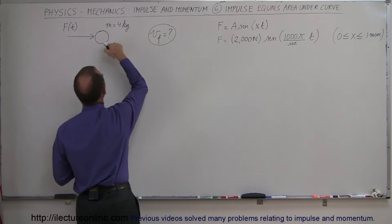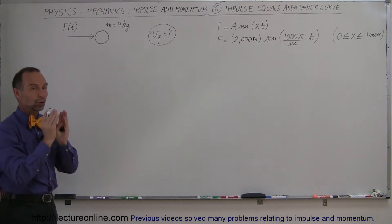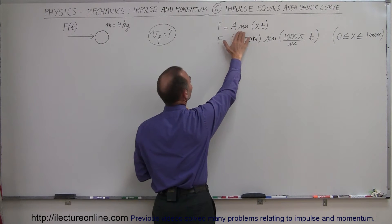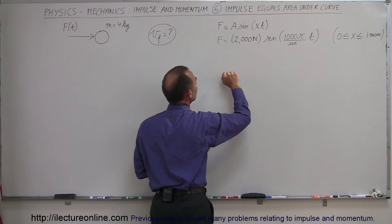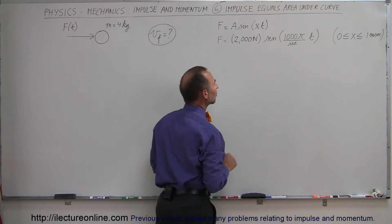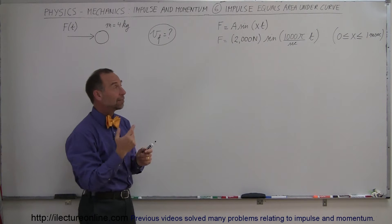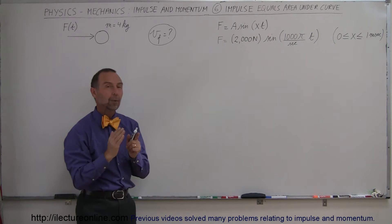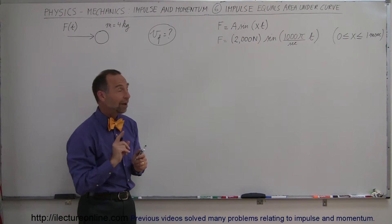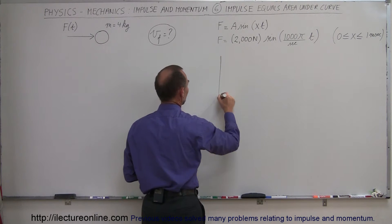We have a 4 kilogram object, and we're applying a force to the object for a short amount of time. The force will have an equation A sine of xt, where A is 2,000 newtons times the sine of 1,000 pi per second times t. If you work that out, the contact period is about 1 millisecond — this is only valid for 1 millisecond. If you graph that equation, force versus time, it will look like this.